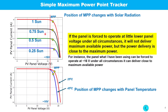It should be mentioned that the position of the MPP not only changes with solar radiation, but also with temperature. If a panel is under sunlight for some time, the temperature of the panel can go 10 to 20 degrees Celsius higher than ambient. For a 20-degree change, the characteristic shifts and the MPP also moves to the left.